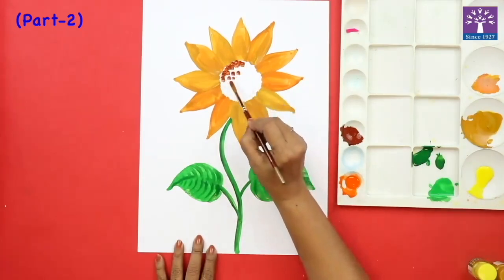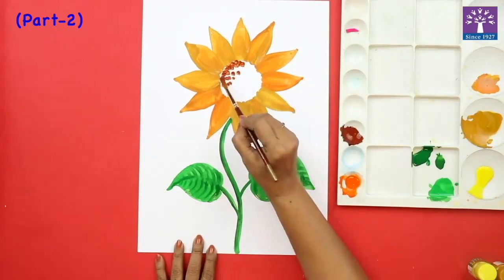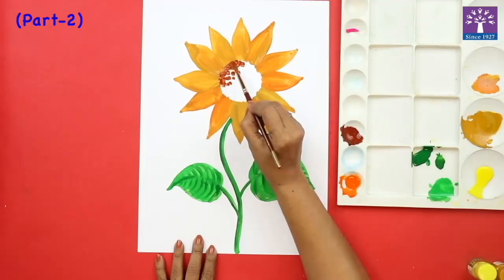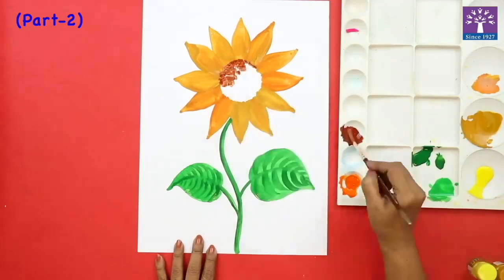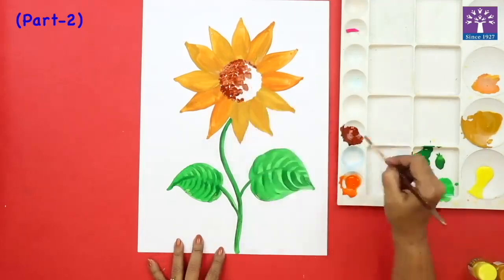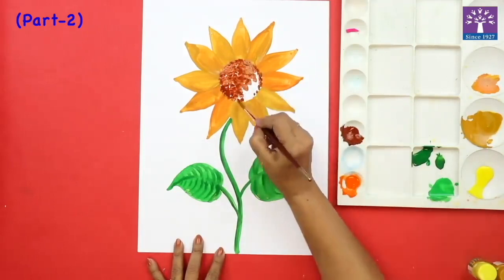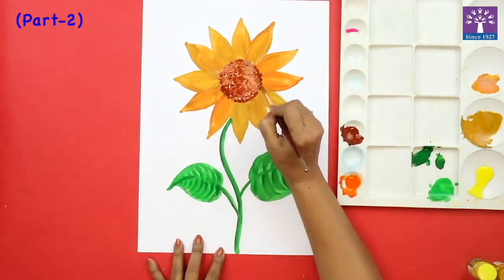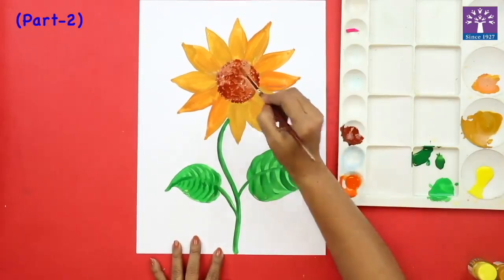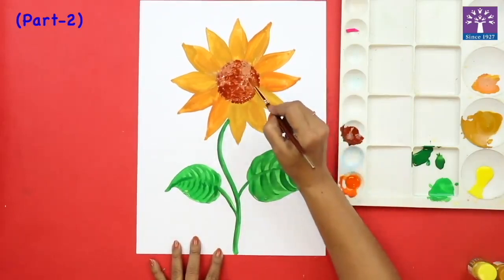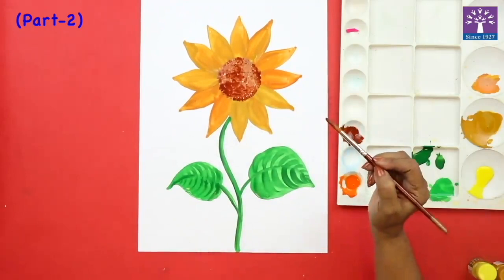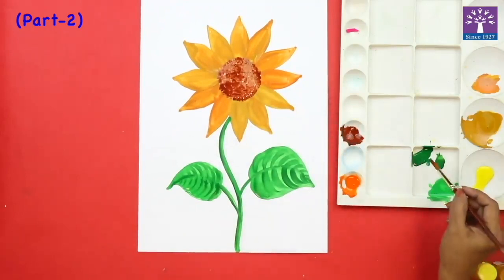See, I am just giving some small dabs with the tip of the brush, very gently. It's okay if it goes a little bit outside. See, when we do this dabbing, it is giving this uneven texture. So these are the seeds of your sunflower.